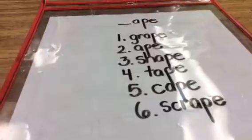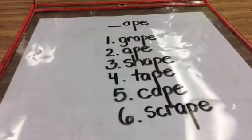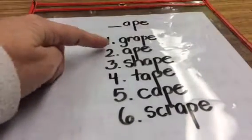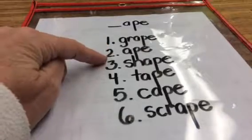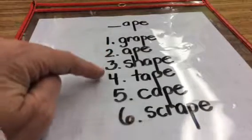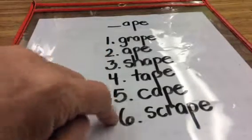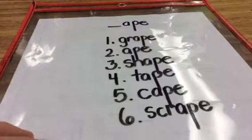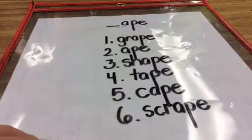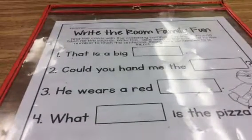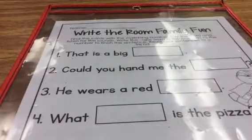Let's go through and quickly read these words: grape, ape, shape, tape, cape, scrape. Now let's turn it over and try to put them in sentences so that they make sense.